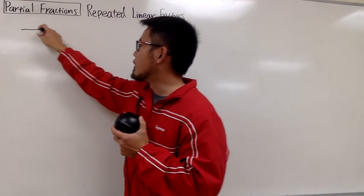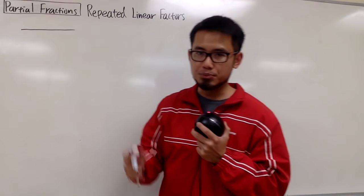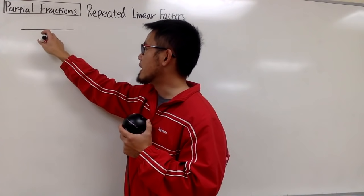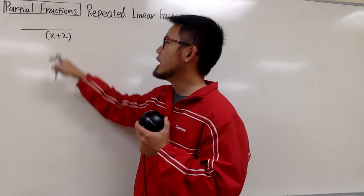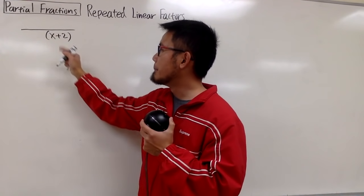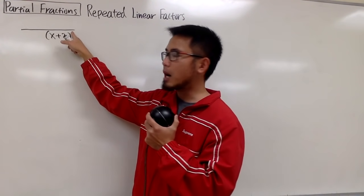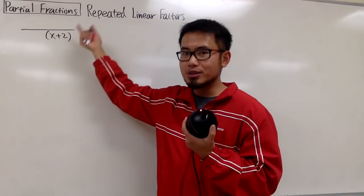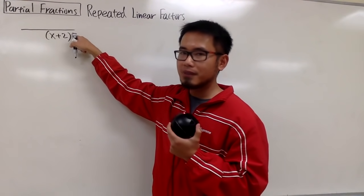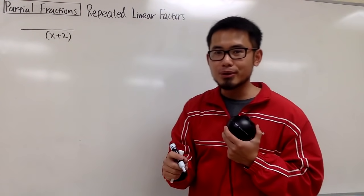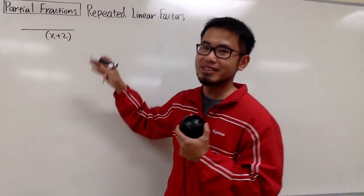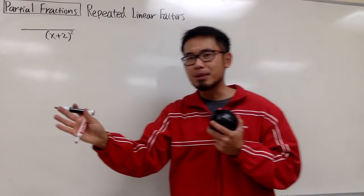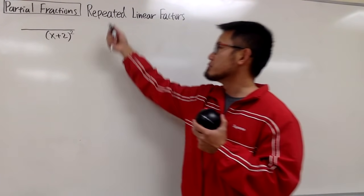Let me show you a fraction first — by fraction, I mean a rational expression, namely a polynomial over a polynomial. Let me give you a factor: x plus 2. This is linear because we have x to the first power, but it's not being repeated because we only have this to the first power. If you want it to be repeated, just raise it to a different power — you can put 2, 5, or 10. Any power besides 1 makes it repeated. For simplicity, I'll put down just 2, meaning x plus 2 times x plus 2.